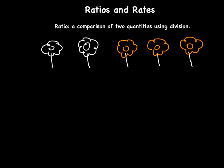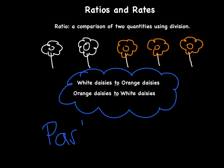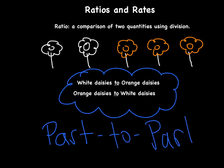I have some white and some orange flowers, and we're going to compare these two quantities. The first way we can compare them is a part-to-part ratio. That means we're going to use part of the group and compare it to the other part. For instance, white daisies to orange daisies, or orange daisies to white daisies — both of these are part-to-part ratios.